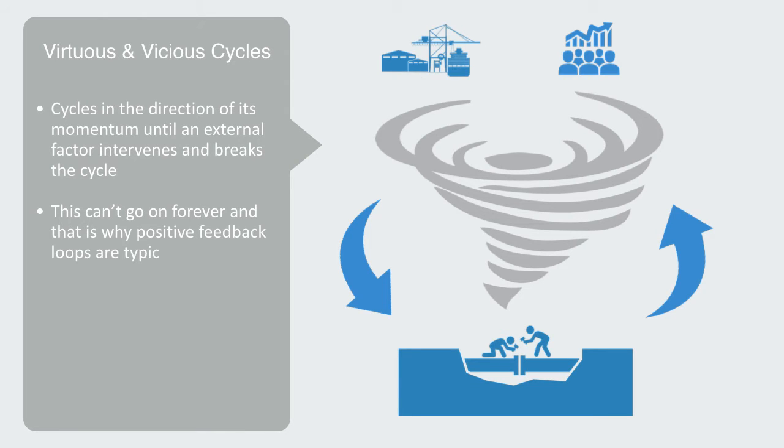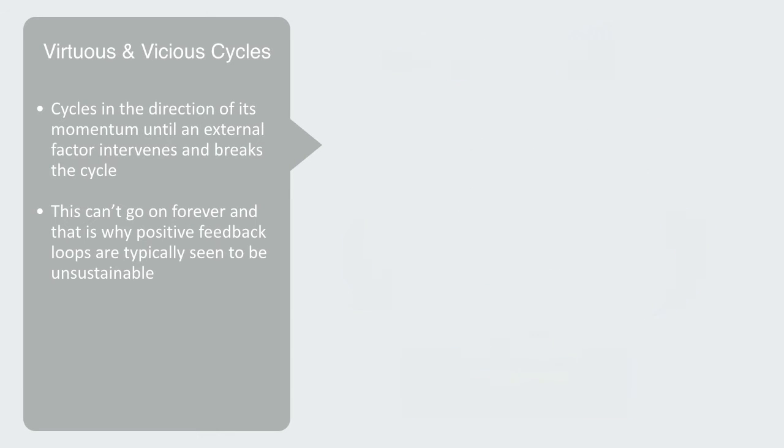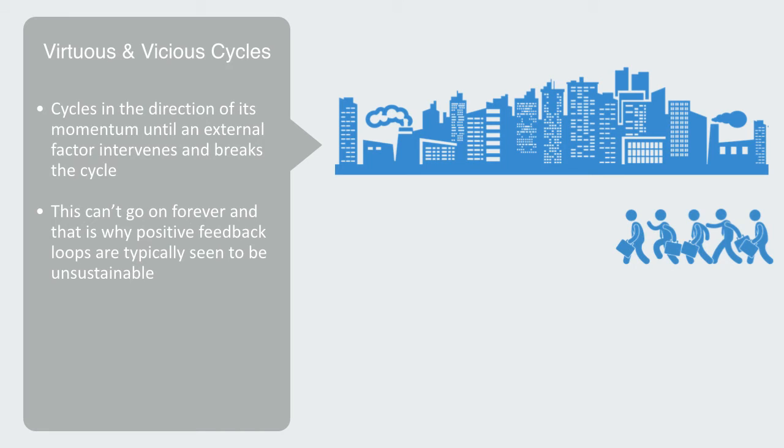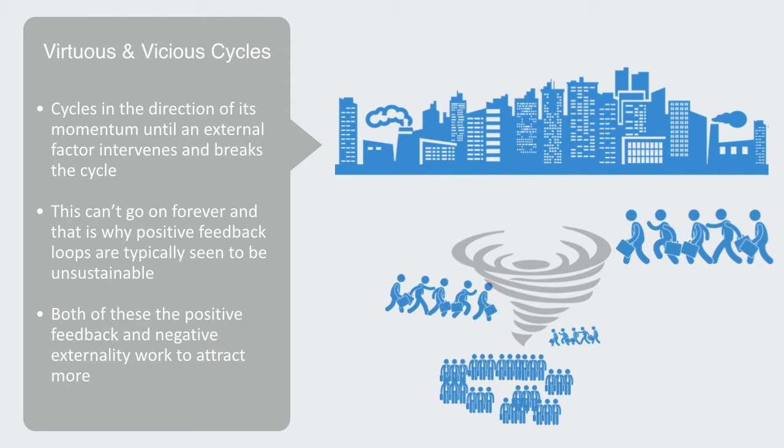And that is why positive feedback loops are typically seen to be unsustainable. We might think of urbanization as a positive feedback loop. The more people that move into an urban center, the more resources that are concentrated in them, allowing them to leverage economics of scale to be more economically efficient. But also, it has a negative externality, in that it reduces the rural population, and thus the capacity to provide desired services in the countryside. Both of these, the positive feedback and negative externality, work to attract more people into the city. But again, this creates an unsustainable dynamic, and we end up with overpopulated and underserviced megacities like Jakarta and Lagos.